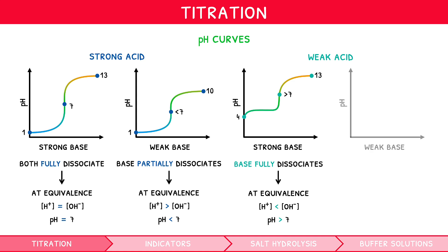When adding a weak base to a weak acid, both partially dissociate. Therefore, the shape of the graph and pH at equivalence point is very hard to predict.